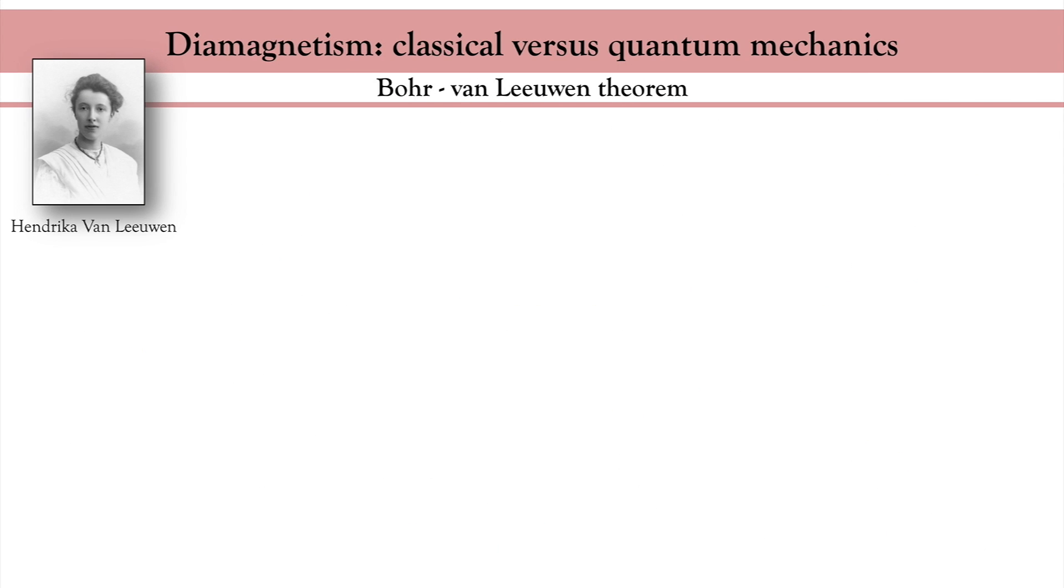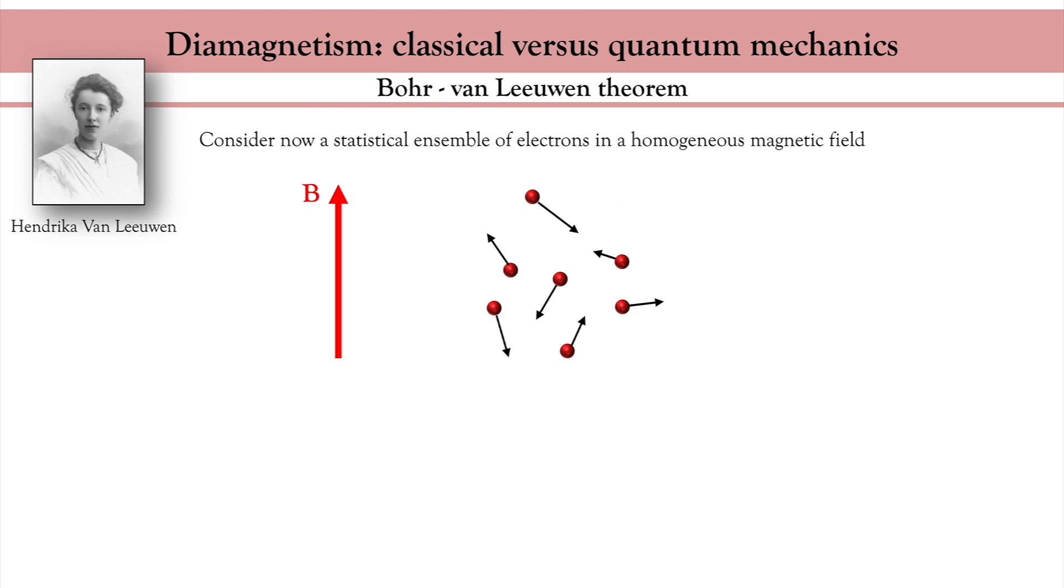This classical theory of diamagnetism is a nice theory, but unfortunately its result is misleading. Consider now a classical gas of electrons with a statistical distribution of their velocity. Then, when I turn on the magnetic field, each electron will generate its own magnetic moment depending on its velocity. If I compute the statistical average of this magnetic moment, I find that it vanishes to zero. Indeed, although the magnetic field applies a Lorentz force on the electron, it does not modify its energy. Therefore, the statistical average with or without magnetic field is unchanged and no overall magnetic moment emerges.